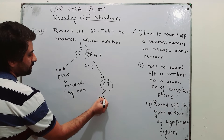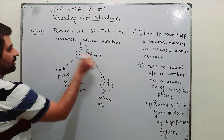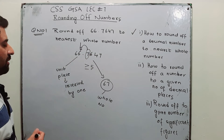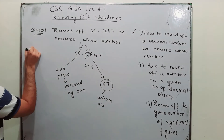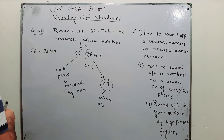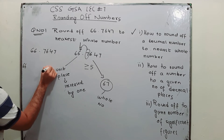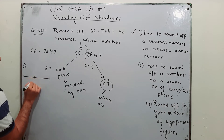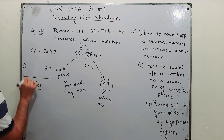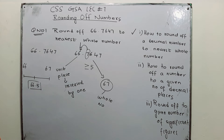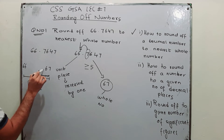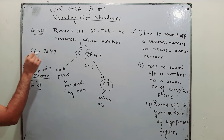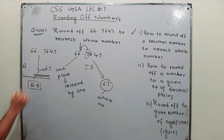Your nearest whole number is 67. You can approach this question a second way as well. 66.7647 is between two whole numbers: 66 and 67. If you draw a number line, the middle value is 66.5. If any number lies in the range of 66.5 or more, you round it off to 67. Since 66.7647 falls in this range, you round it off to 67.